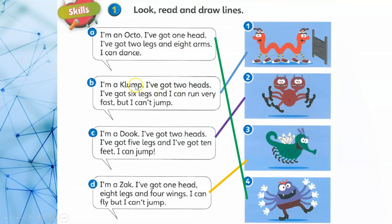I'm a Club. I've got two heads, I've got six legs, and I can run very fast, but I can jump.